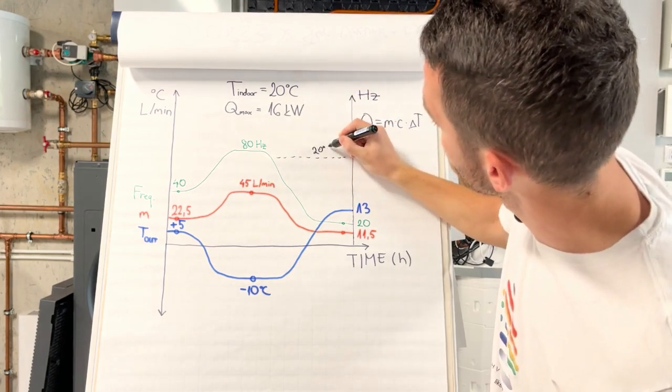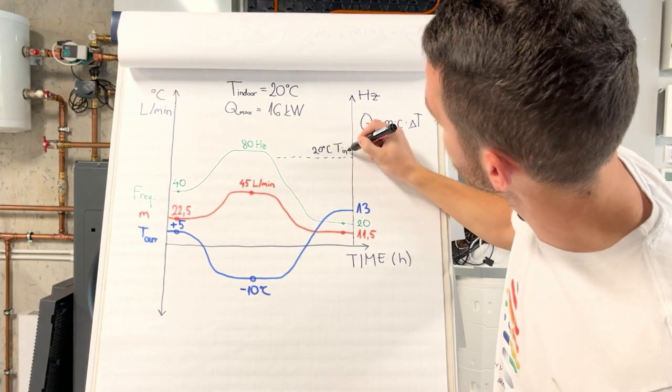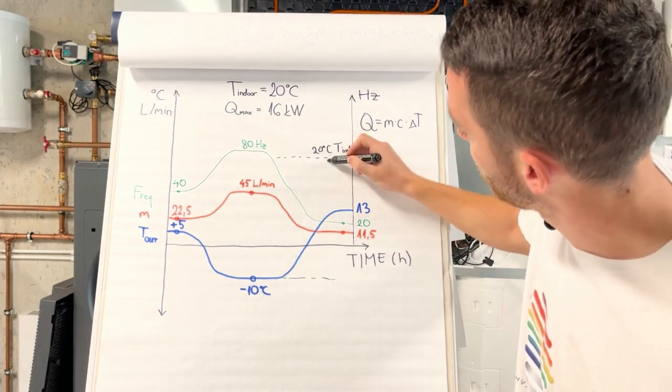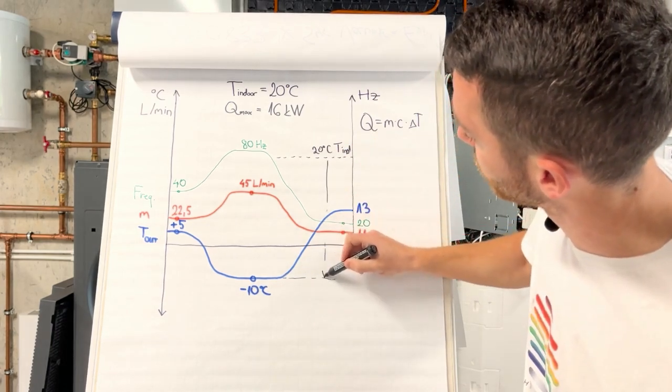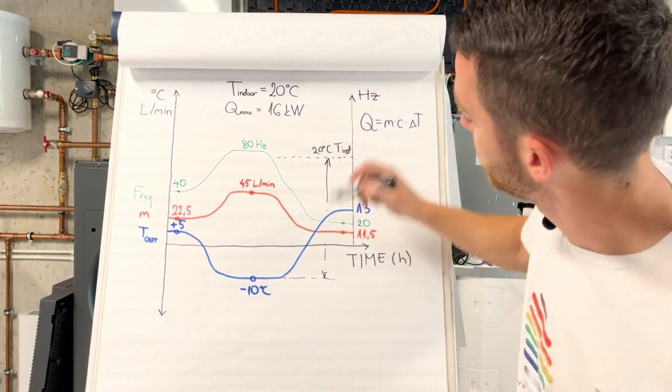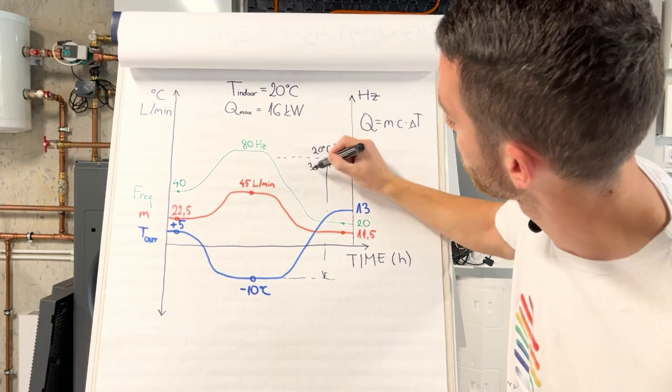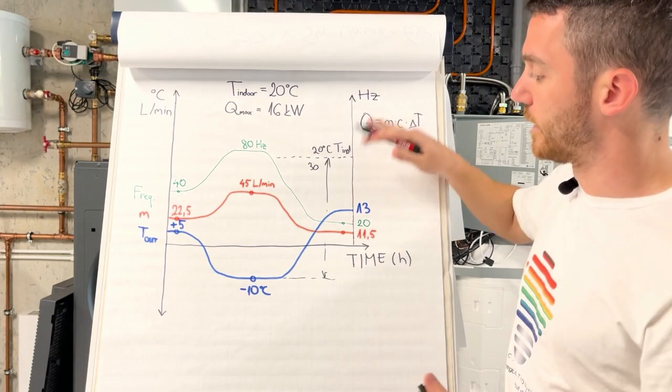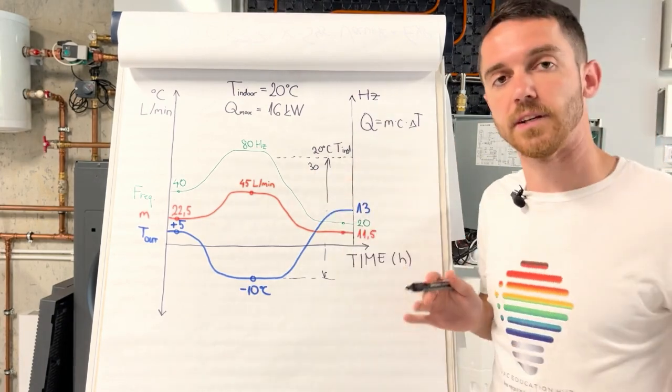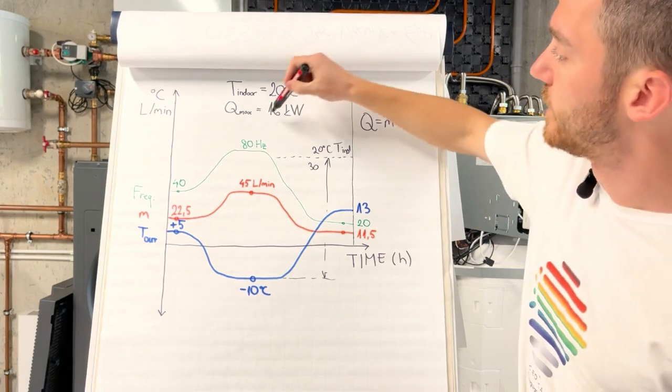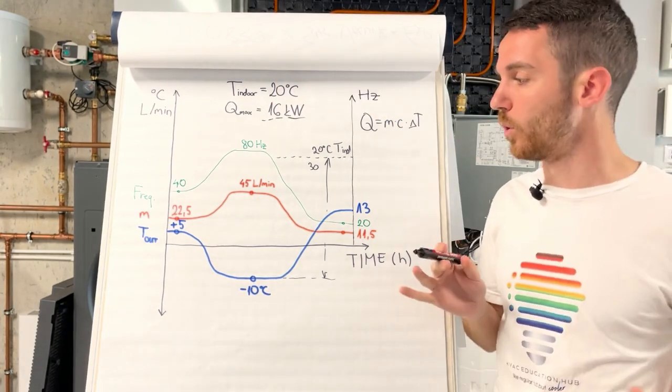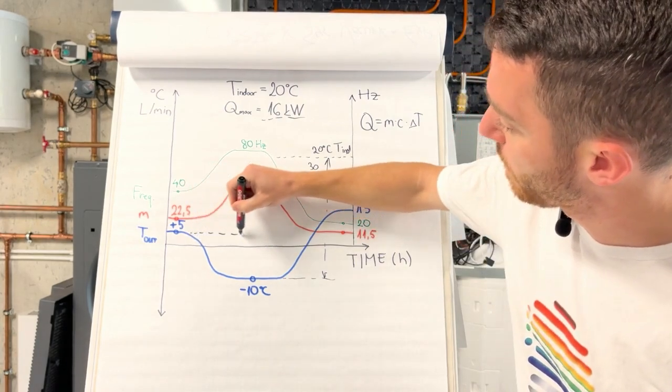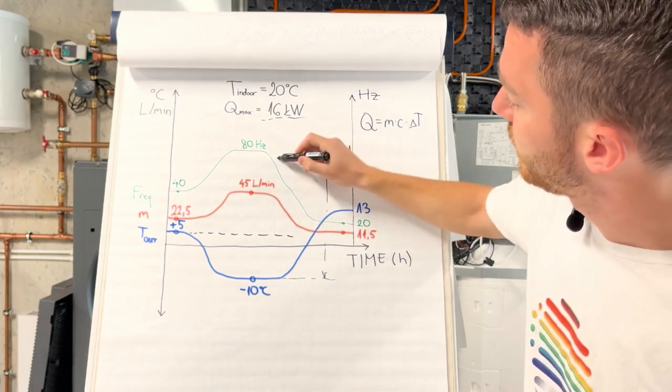Why? Because if we have 20 degrees indoor temperature and our delta between indoor and outdoor here is 30, we need to ensure that for our delta T outdoor-indoor of 30 degrees Celsius we need 16 kilowatt. This is our full load.